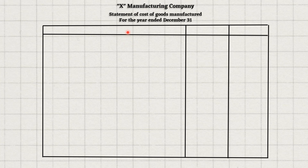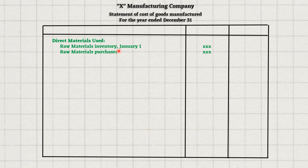To start production we first need some raw materials. We may have some materials that were unused in the previous period — we can use them now. After some months of production we may need more raw materials, so we will purchase them. We get the total raw materials, then deduct any raw materials unused in this period. This gives us the raw materials used.